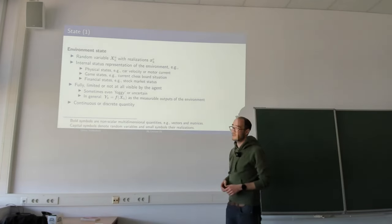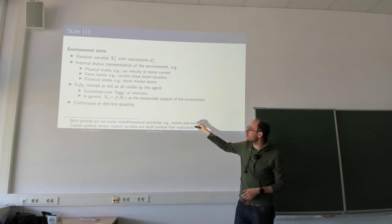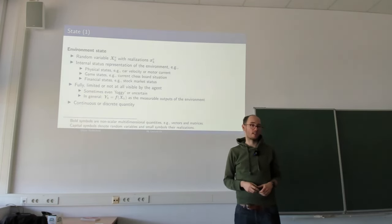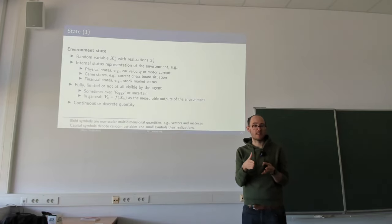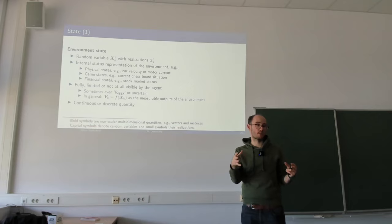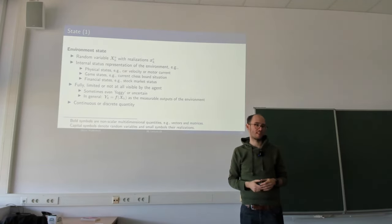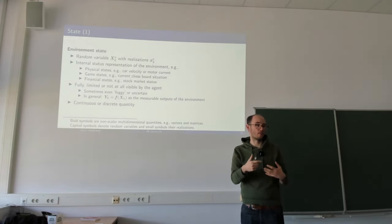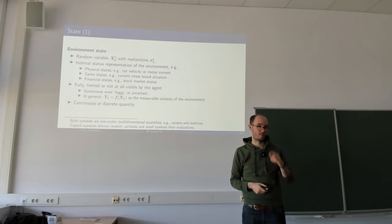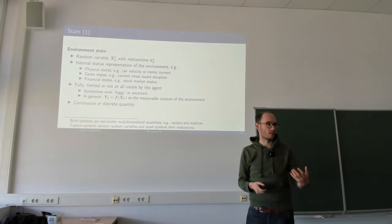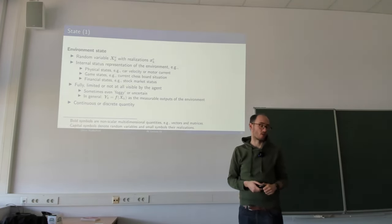The state itself can be a continuous or discrete quantity. We will first consider only discrete quantities. Discrete means we have a finite state space — a finite number of states. For example, a chessboard has an 8 by 8 grid with a finite number of configurations of chess pieces. In a physical world, quantities like speeds and velocities are normally continuous in contrast.